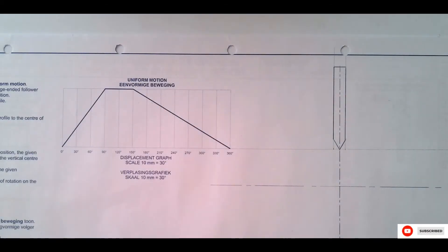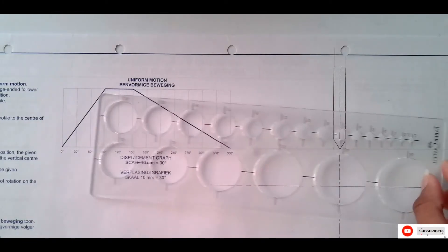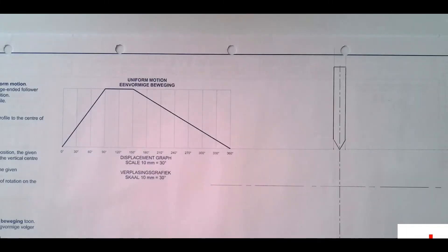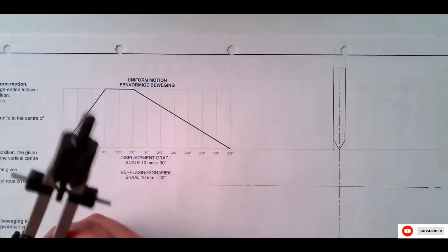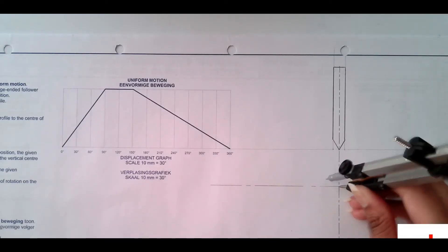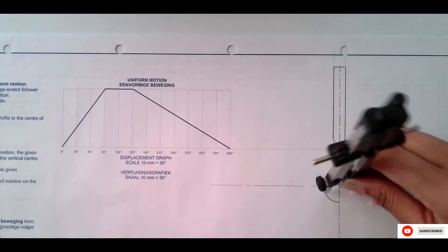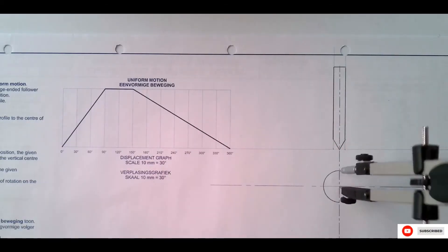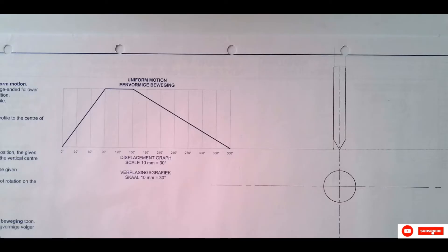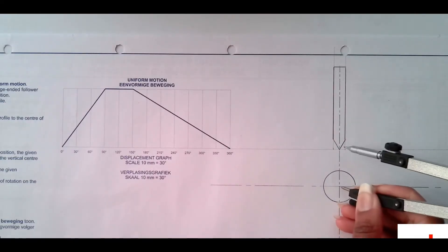If you have a template with the right size you can use it to draw the circle, but mine doesn't have 22 — it's 23 — so I have to use my compass to draw the circle. The radius is 11. Place it here and draw the circle.